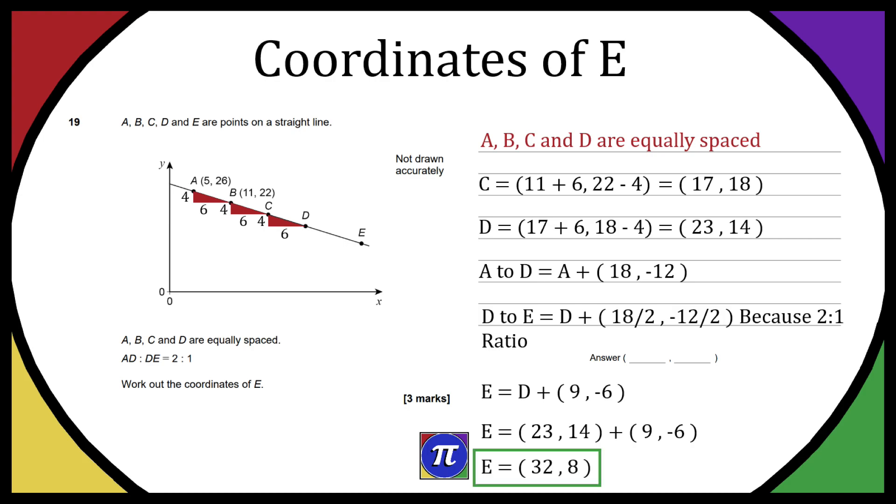And all we've done is worked out how to get from A to D because we know points A and D, then we've halved that travel distance because A to D to E is a 2 to 1 ratio, and if we apply that exactly to point D it will give us the exact coordinates of E.